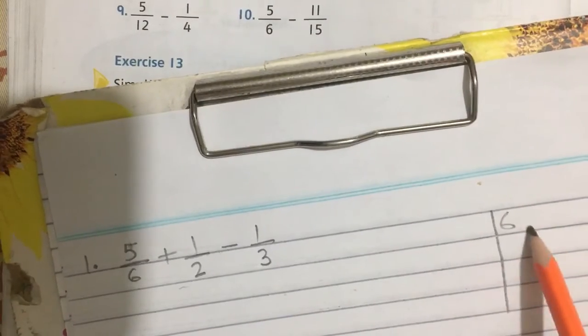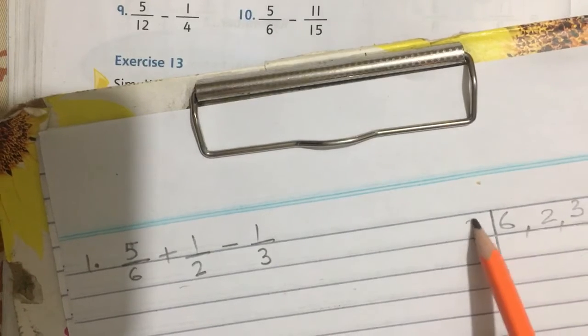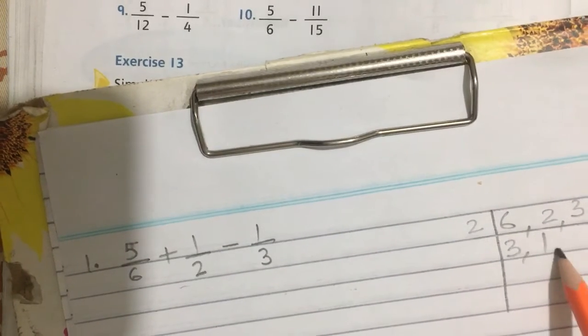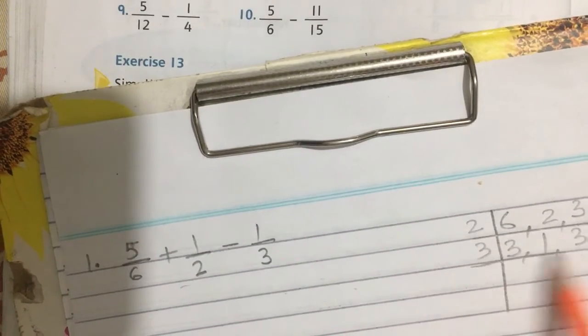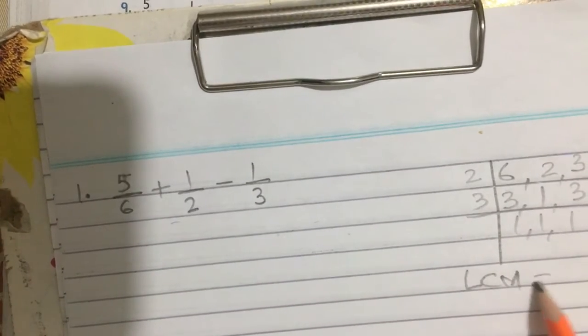First of all, we will take LCM of denominators which is 6, 2, and 3. 2 threes are 6, 2 ones are 2 and 3. Then 3 ones are 3 and 3 ones are 3. So LCM is 3 twos are 6.